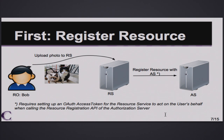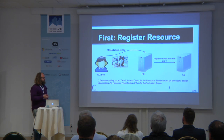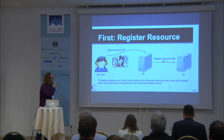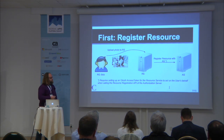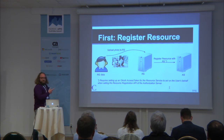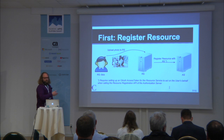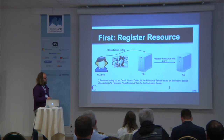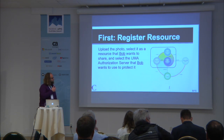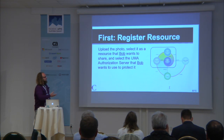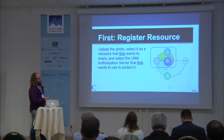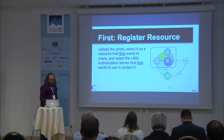The UMA process can be divided into three steps. First, Bob has a photograph and he wants to share it. He is going to upload the photo to the resource server, and then he is going to register that photo as a resource with the authorization server. To do this, a standard OAuth access token is required for the resource owner to let the resource server act on his behalf when registering the resources with the authorization server. The photo is uploaded, selected as a resource that Bob wants to share, and he selects the UMA authorization server he wants to use to protect it.